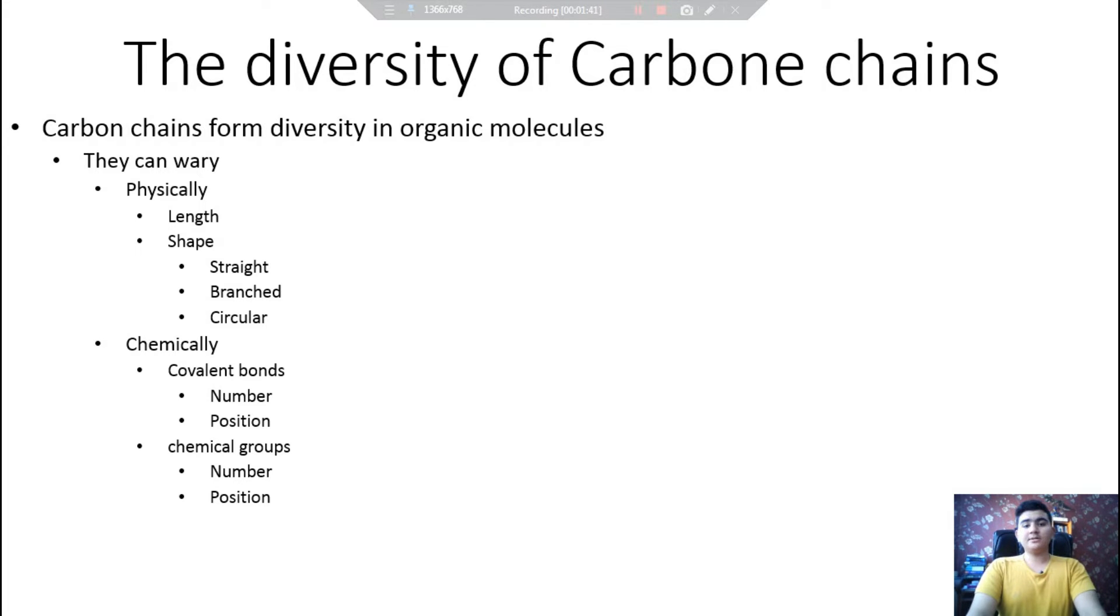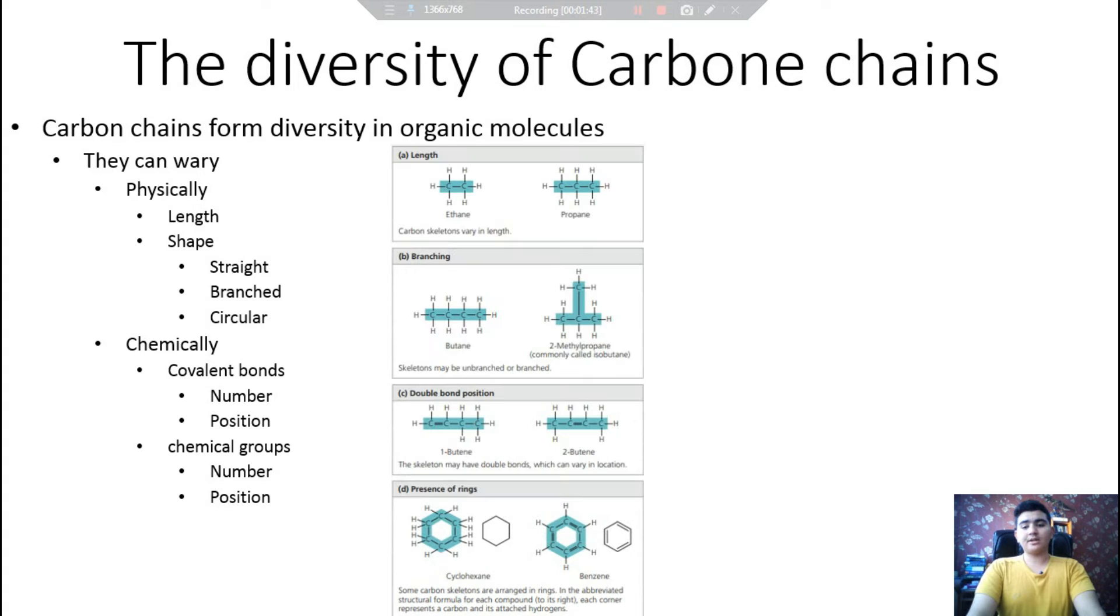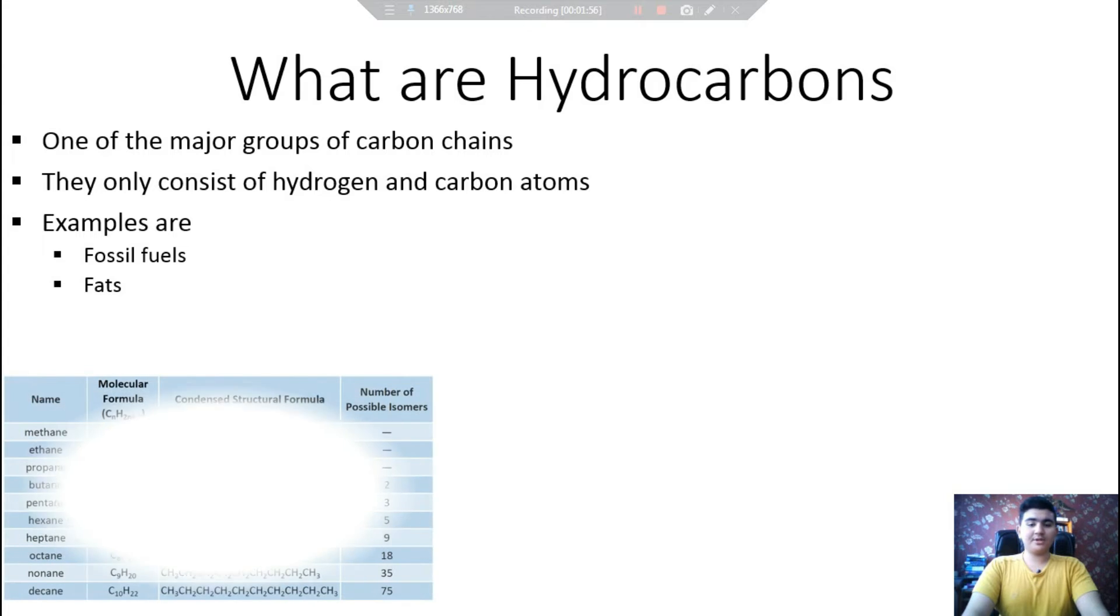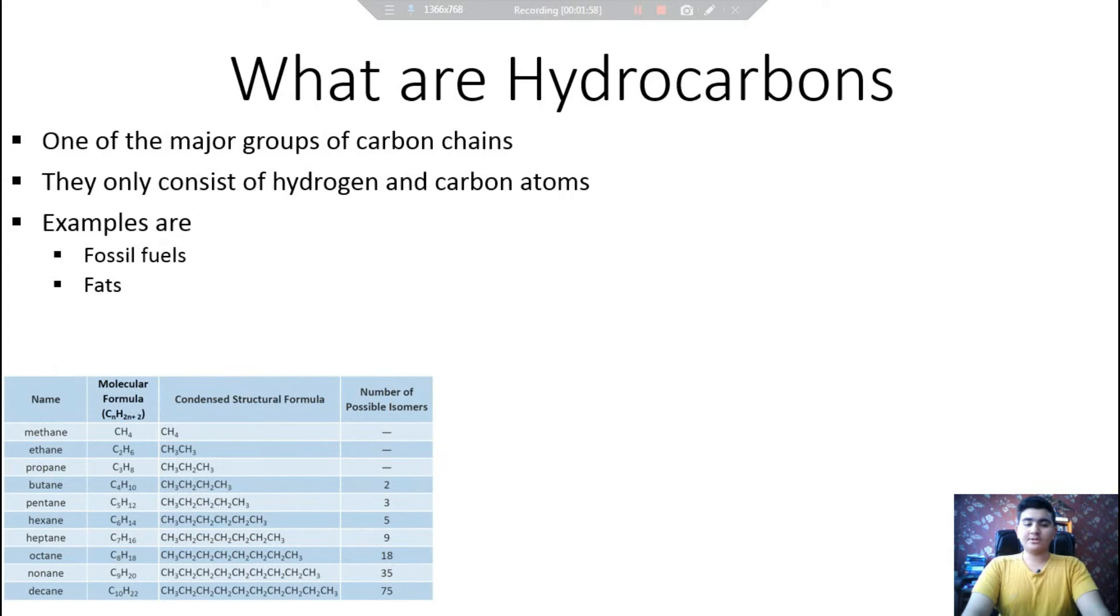And here's a picture to illustrate what I just said. So a major group of these carbon chains are the hydrocarbons. So as you can see in these pictures, hydrocarbons are organic molecules, of course, that consist of only hydrogen and carbon atoms in their structure.